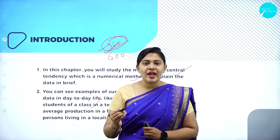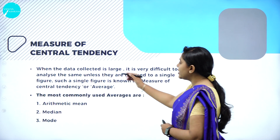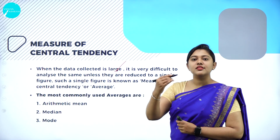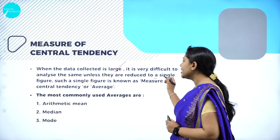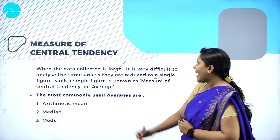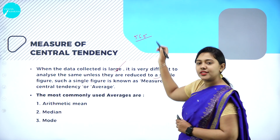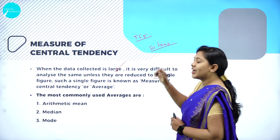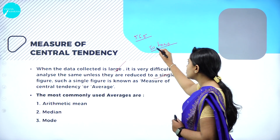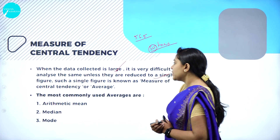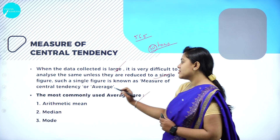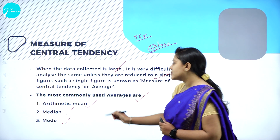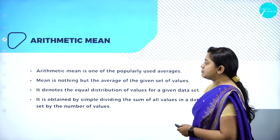When the data collected is large, it is very difficult to analyze unless it is put into one single value. Based on that single value, you take up the decision. For example, average marks is 565 — based on this they take the decision. Average production is 50 tons in a factory — based on this one single value, decisions are taken. The most commonly used averages are arithmetic mean, median, and mode.